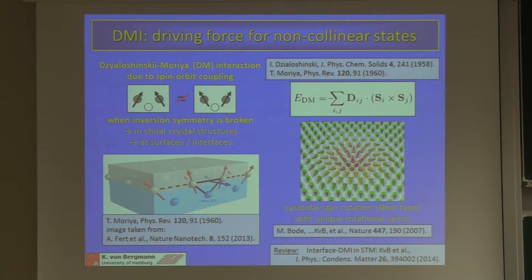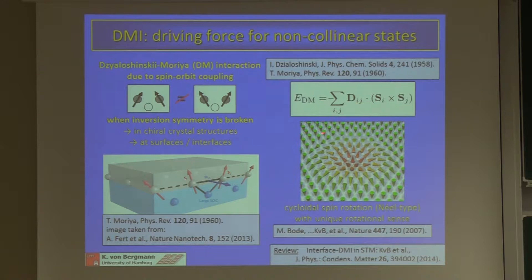I will concentrate on this kind of interface-induced DMI. At such an interface, when you look at the spins, you have selection rules for the DMI, and in the end you will favor a cycloidal or Néel-type twist of the spin texture. All the interface-induced skyrmions look like hedgehogs, and for each material they occur in a material-specific rotational sense.